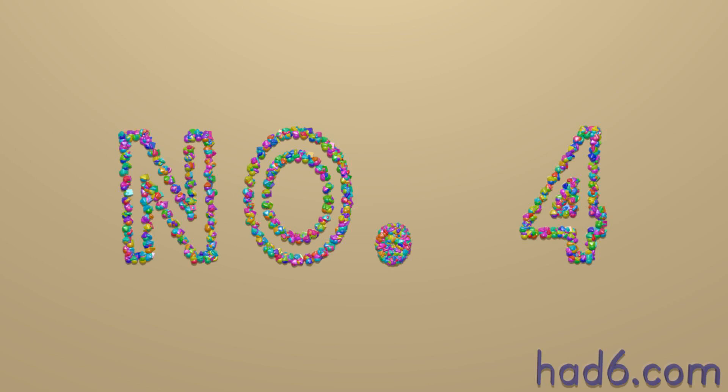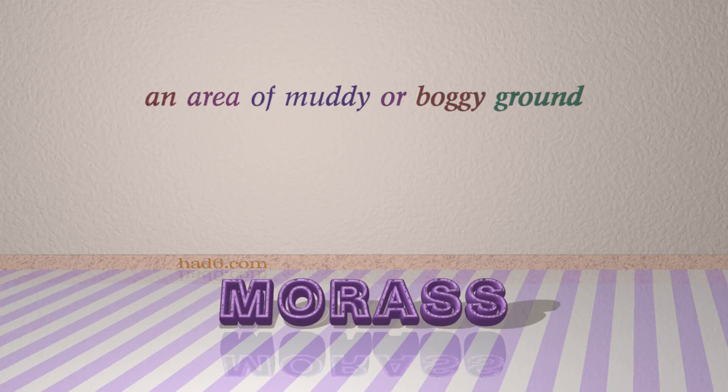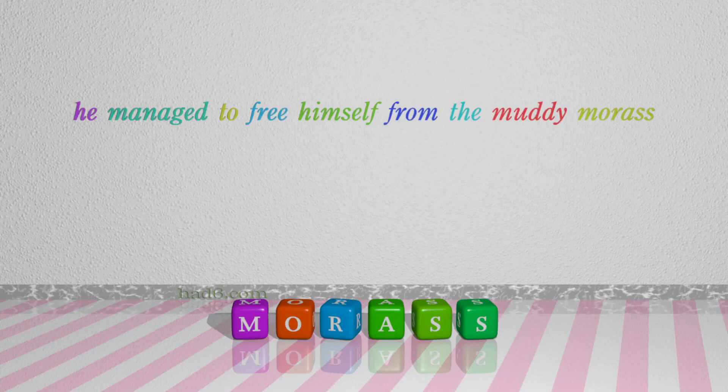Number 4: Morass. Which means an area of muddy or boggy ground. For example: He managed to free himself from the muddy morass.